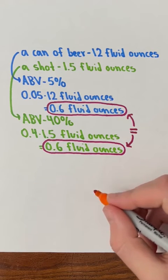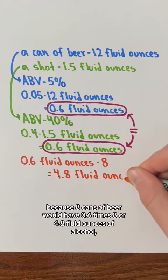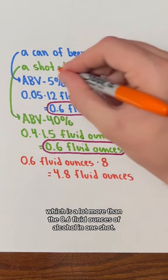In terms of alcohol, no, because 8 cans of beer would have 0.6 times 8 or 4.8 fluid ounces of alcohol, which is a lot more than the 0.6 fluid ounces of alcohol in one shot.